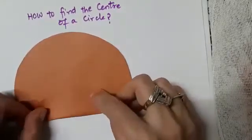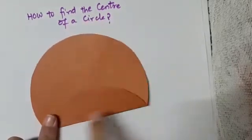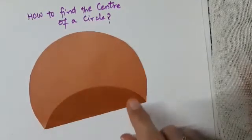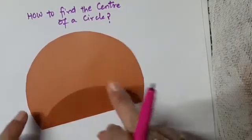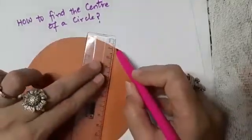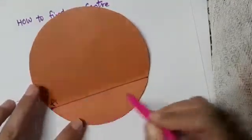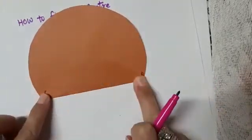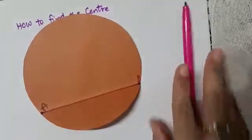I prefer to find the center by following a specific process: you get two chords which are not parallel to each other. A chord is a line segment formed by joining two points on the boundary of the circle. By paper folding, I have got this chord AB, and points A and B are on the boundary of the circle.